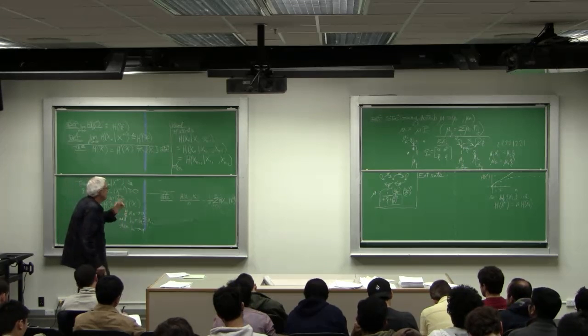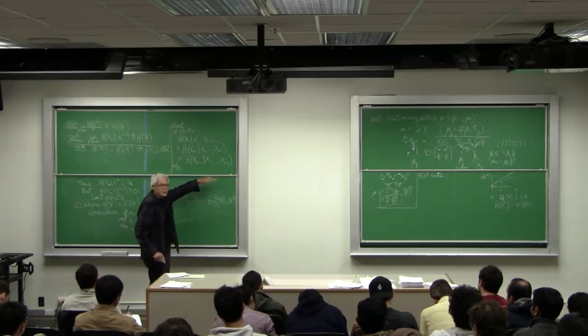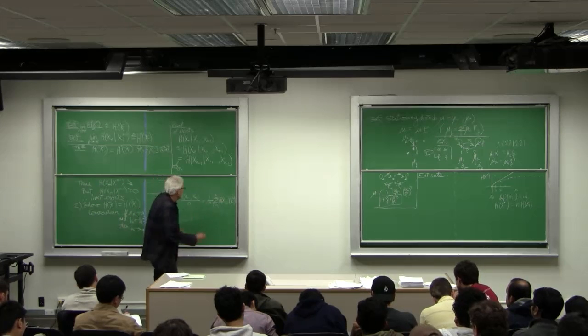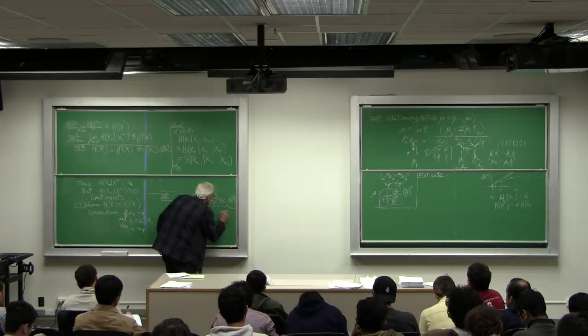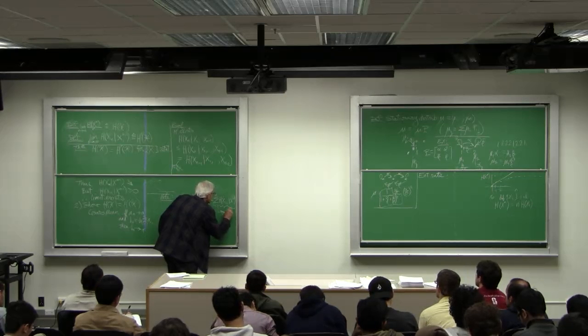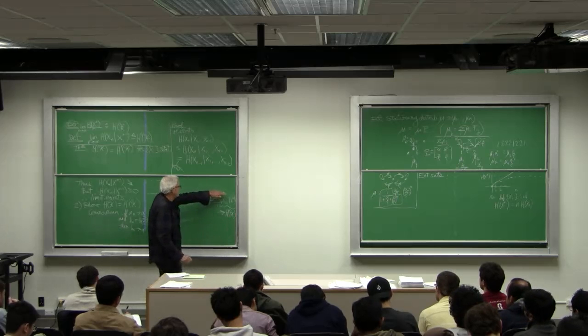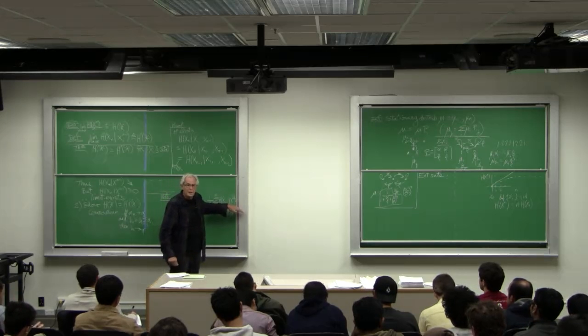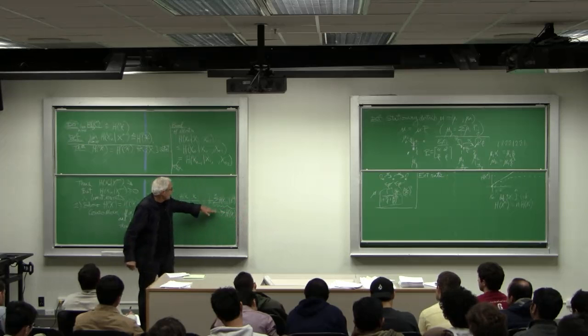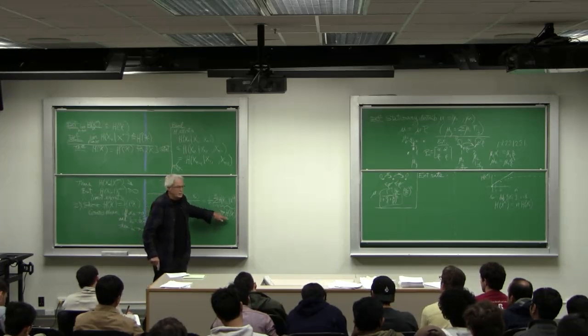All right. Now we're done. If the process is stationary, then the limit of this is h prime, which we have shown since this is monotonic decreasing, positive that this limit exists.